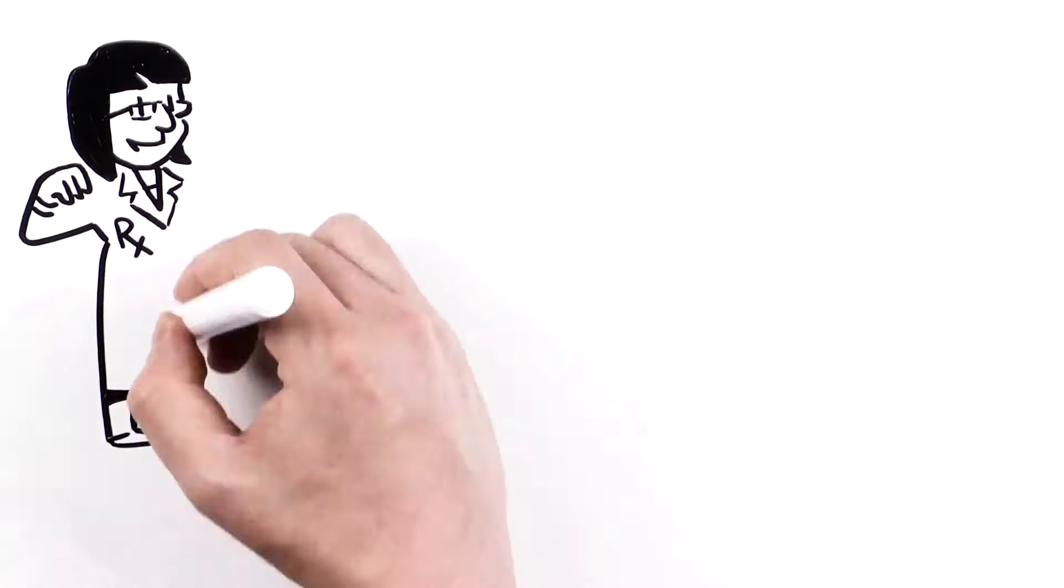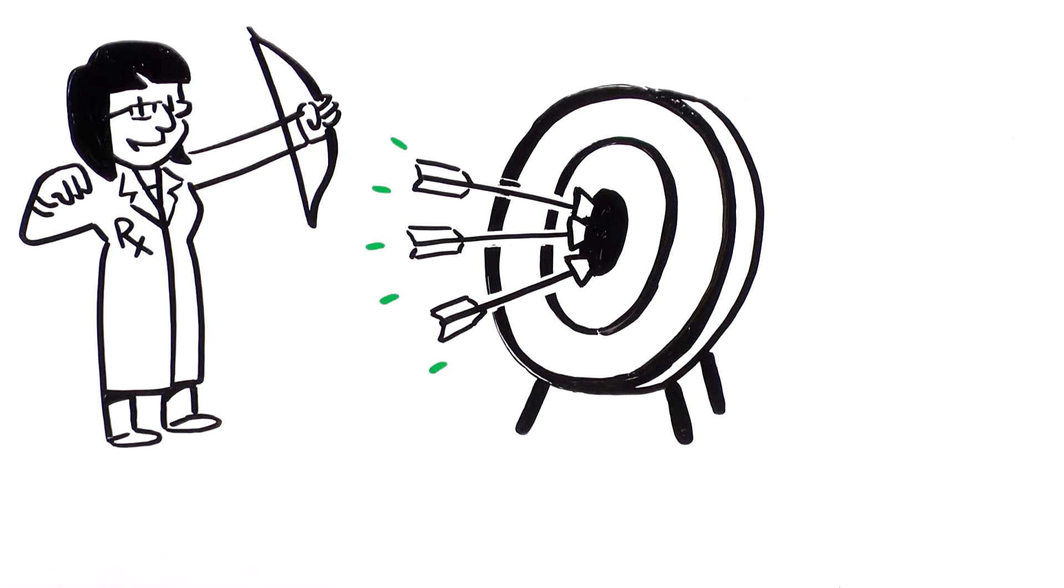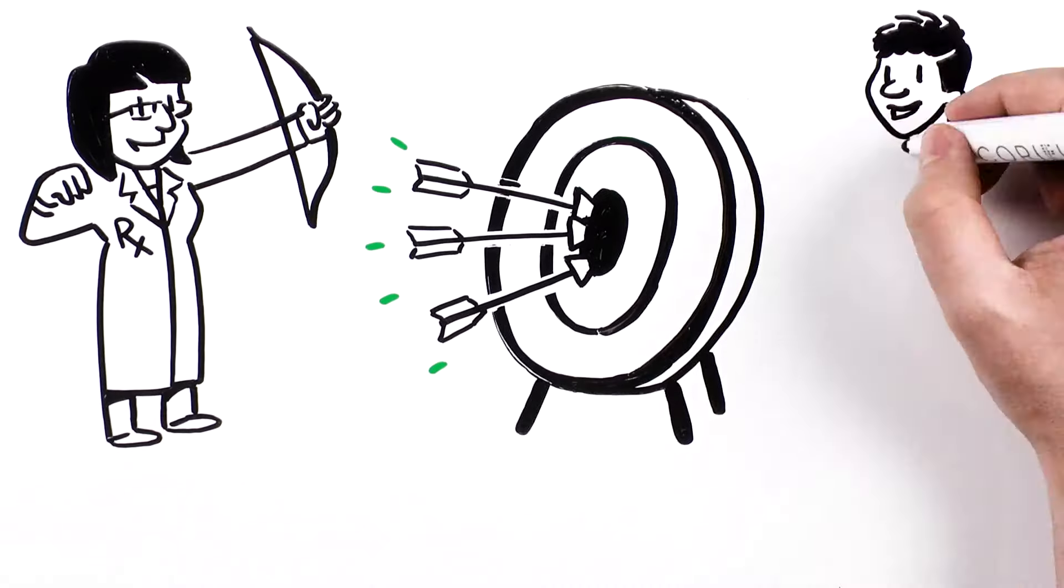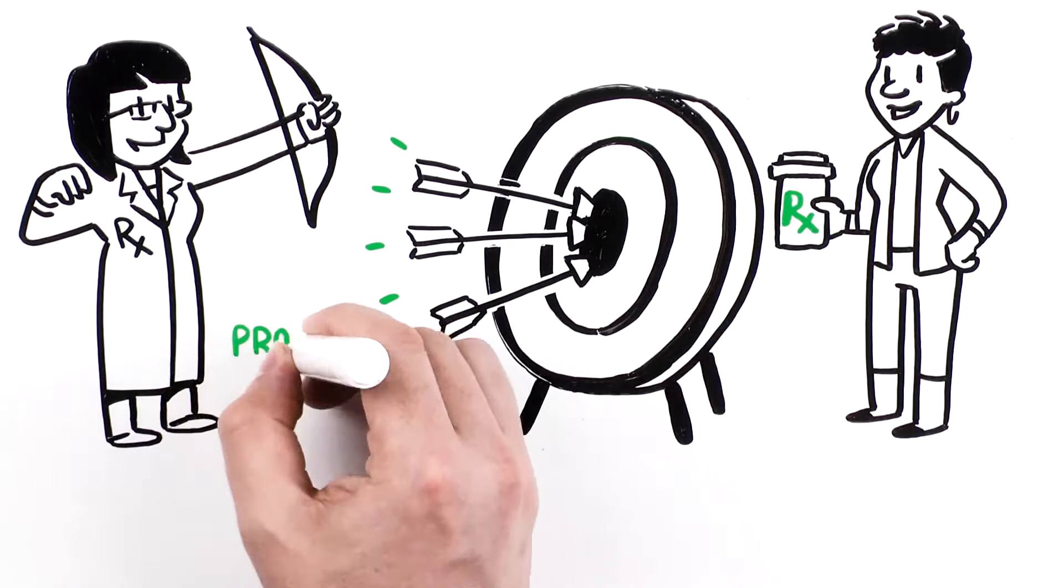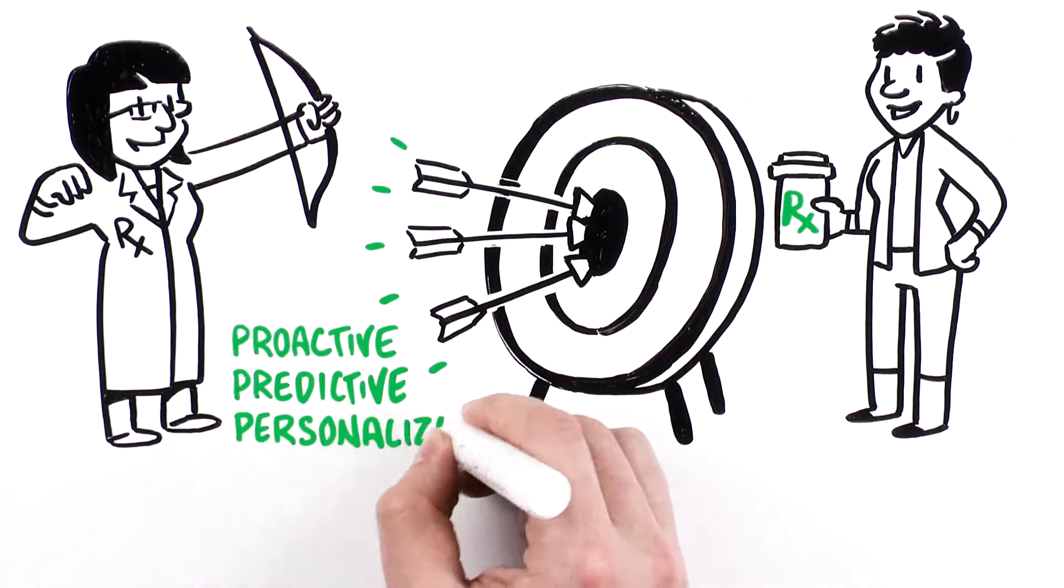Coriell Life Sciences delivers the power of the Coriigen Medication Safety Program to help real people like you to become healthier through proactive, predictive, and personalized prevention.